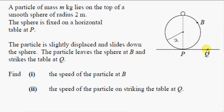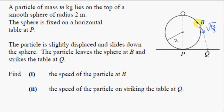For the second part, we want the speed of the particle on striking the table at point Q. Although the particle leaves the sphere with velocity directed tangentially at magnitude √(4g/3), this looks like a complicated projectile motion problem. However, the only force acting on the particle after it leaves the sphere is gravity, so we can use energy conservation again — we only need the speed, a scalar quantity, which makes life much easier.